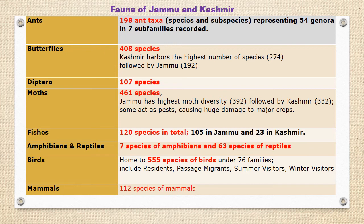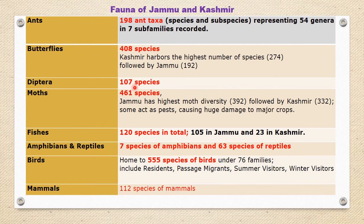This table depicts fauna of Jammu and Kashmir, starting from ants to mammals. In ants, we have 198 taxa which includes species and subspecies representing 54 genera in seven sub-families recorded so far. The second class is butterflies — we have 408 species, among them Kashmir harbors the highest number at 274, followed by Jammu with 192. In case of Diptera, we have 107 species. In moths, we have 461 species — Jammu has the highest moth diversity with 392 species, followed by Kashmir with 332 species.